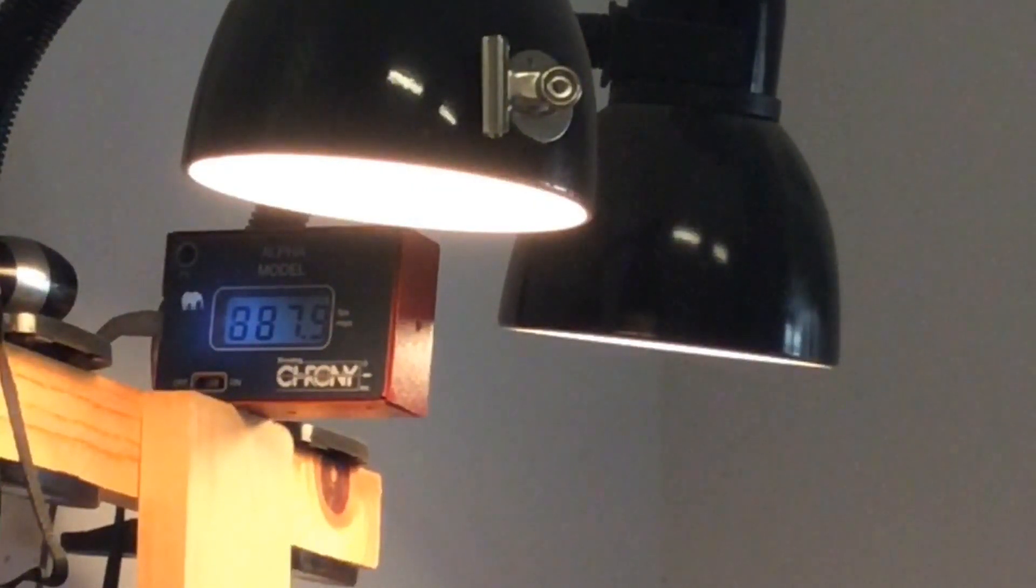And that one is 887. So we're going to take an average of that, and that's what we're going to use. We're going to put that information in ChairGun along with some other information I'll show you how I do that.